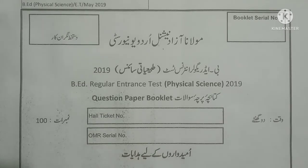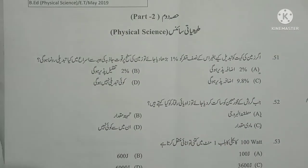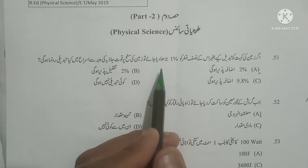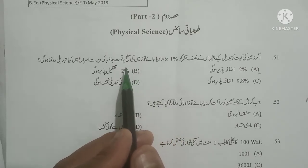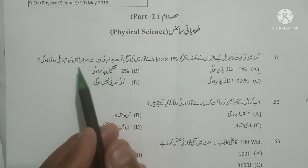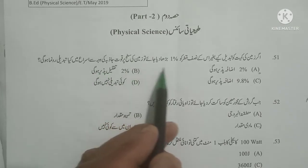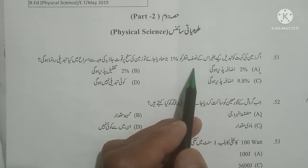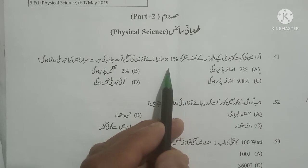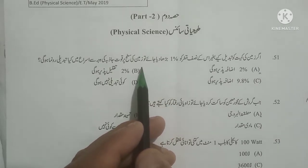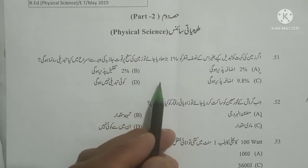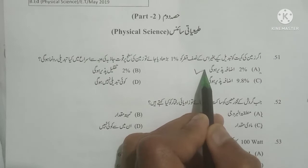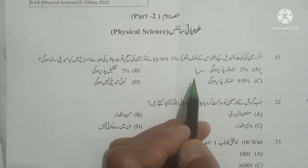Question 51: Agar zameen ki keemiyat ko tabdeel kiye bagair iske nishv qatar ko 1% bharha diya jaye toh zameen ki sata par kuwate jazba ki wajah se isra mein kya tabdeeli ronuma hogi? That means: if the radius of earth were to be increased by 1% without changing its mass, what would be the change in acceleration due to gravity on the surface of earth? The correct answer is: acceleration due to gravity decreased by 2%. I have discussed this question in the 2021 B8 Physical Science paper in detail — please watch that video.